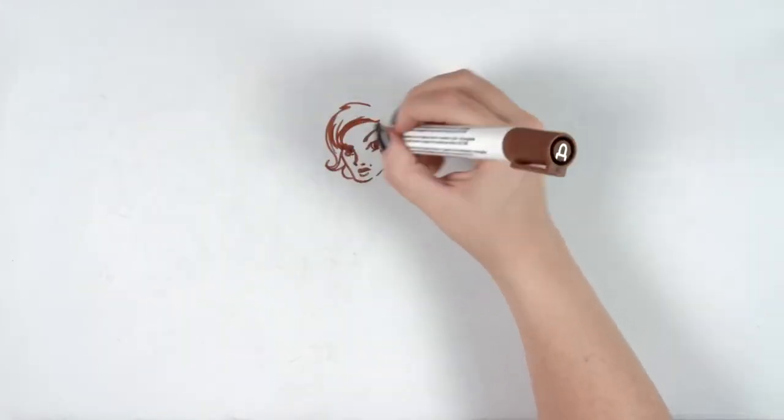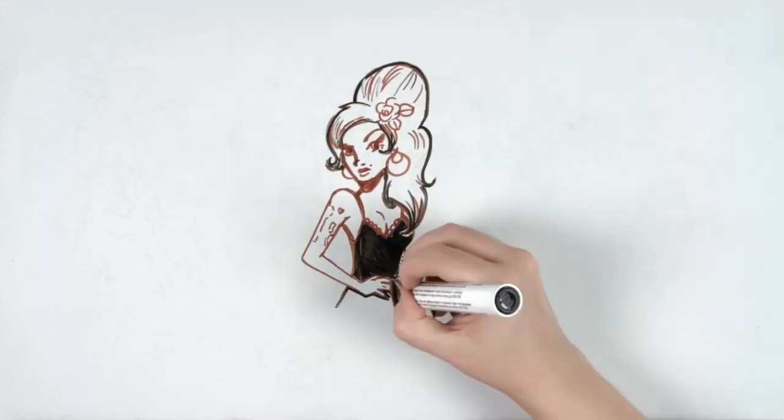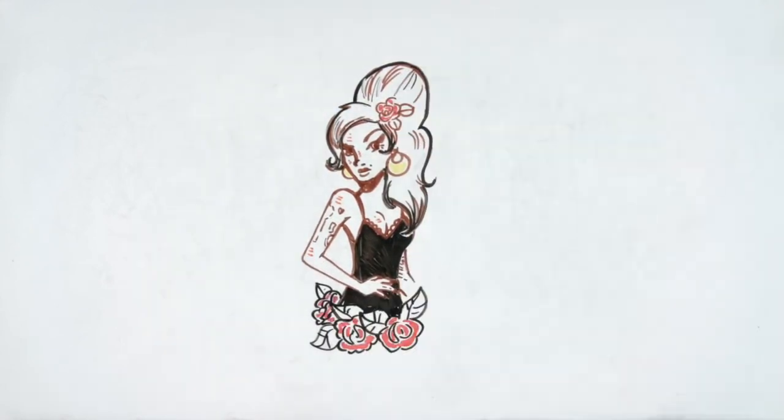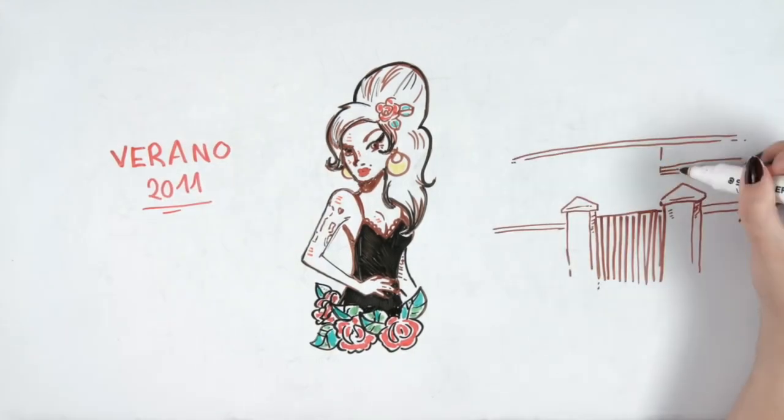The death that went around the world was that of Amy Winehouse, the singer of Back to Black. She was found dead in her London home in the summer of 2011. A lifeless statue of the artist was found in the British neighborhood of Camden.